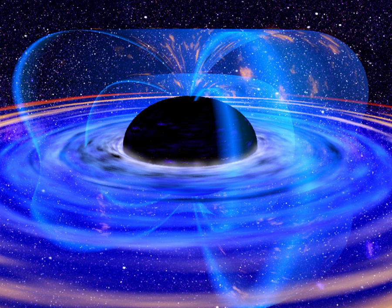Information suddenly escapes out during the final stage of black hole evaporation. Advantage: a significant deviation from classical and semi-classical gravity is needed only in the regime in which the effects of quantum gravity are expected to dominate. Disadvantage: just before the sudden escape of information, a very small black hole must be able to store an arbitrary amount of information, which violates the Bekenstein bound.